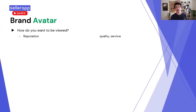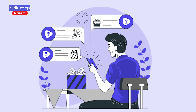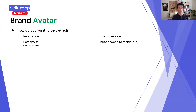How do you want your brand to be viewed? The example I'm giving you on screen applies to the first brand I grew, called Beast Gear. I would say 99% of these points apply for every brand. Most brands want to be viewed as having high quality products and excellent service. Beast Gear's personality was independent, relatable, fun, competent, and not everywhere.